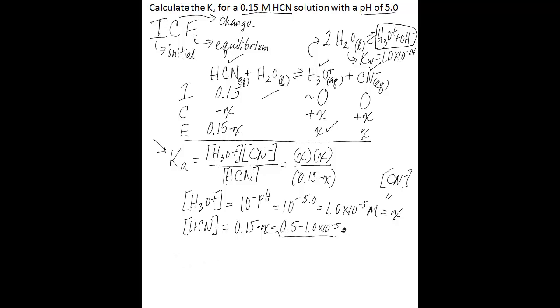Let's just say Ka is equal to 1.0 times 10 to the negative 5 multiplied by 10 to the negative 5. We're just substituting in for these values now that we know our X. And then divided by hydrocyanic acid, which is 0.15 minus 1.0 times 10 to the negative 5.